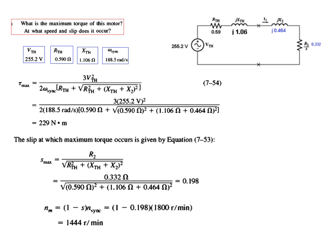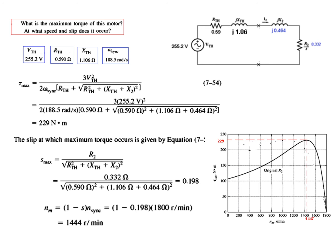With this data in mind, let's build a concept from the torque-speed diagram. Here, if you plug in these two values, you can see that the maximum torque occurs at 229 newton-meters, and the speed at which it occurs is 1444. You can easily get the idea from the graph for induced torque versus speed.